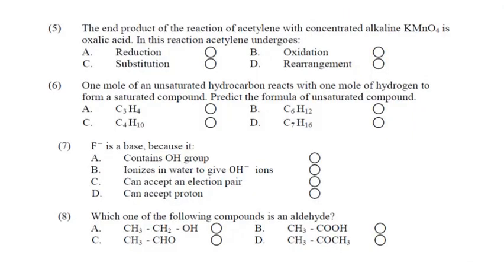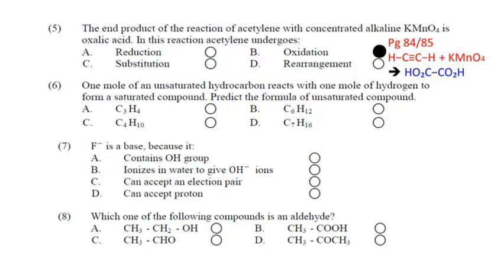Question number 5: The end product of the reaction of acetylene with concentrated alkaline potassium permanganate is oxalic acid; in this reaction acetylene undergoes — page 84-85 کی اوپر ہے solution۔ Acetylene جب KMnO₄ کے ساتھ react کرتا ہے تو end product بناتا ہے اور یہ oxidation ہو رہی ہوتی ہے — concentrated alkaline KMnO₄ ضروری ہے۔